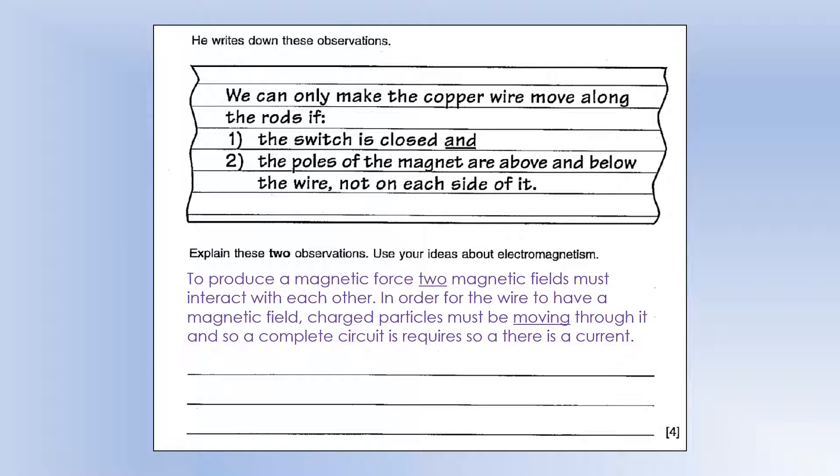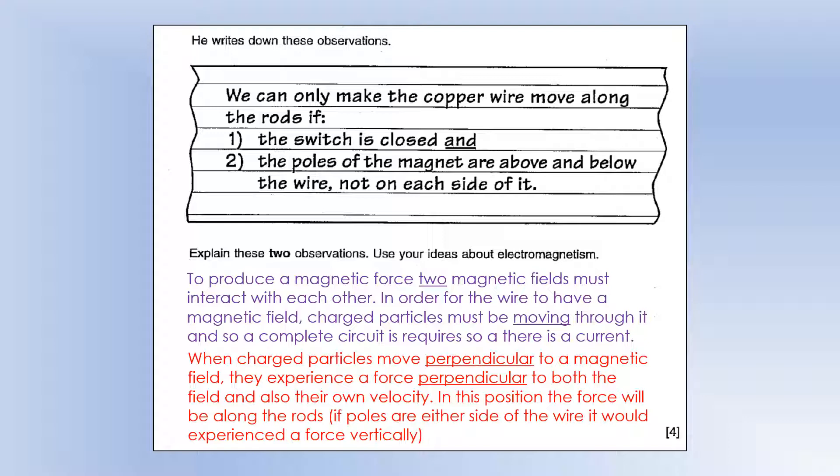So we're going to explain those two observations. To have a magnetic force we need two magnetic fields. It's the same for any non-contact force. For an electric force you need two electric fields. For a gravitational force you need two gravitational fields. For a magnetic force you need two magnetic fields that are interacting. And in order for the wire to have a magnetic field you must have moving charged particles or a current. And therefore you need a complete circuit so that there is a current flowing. So the switch has to be closed. And then when the charged particles move perpendicular to the magnetic field, they experience a force perpendicular to both the field and their velocity. So in the position shown with the poles above and below, the field is going down vertically. The current is sort of coming across through it. So it experiences a force along the copper rods. But if you had the poles either side of the wire, that's going to create a force in the vertical direction. So it's not going to move it along the copper poles. It will make it either jump up or down depending on how you align them.